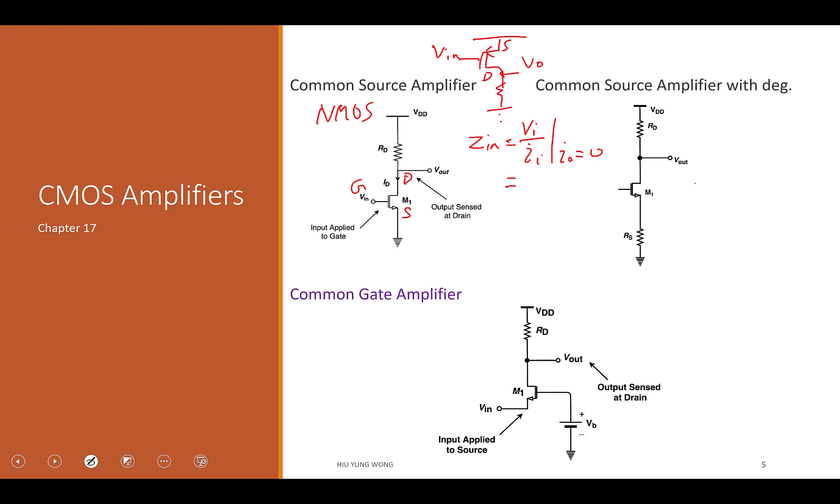You want the next stage to be ideal. You're driving the next stage. The next stage is ideal means the next stage has infinite impedance. Then how much current do you deliver to the next stage? Zero. That's a good question. If you don't ask this question, you will always mess up whether you're talking about Iout.